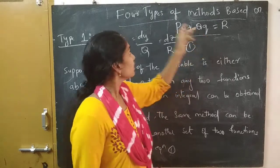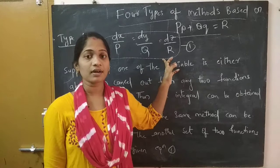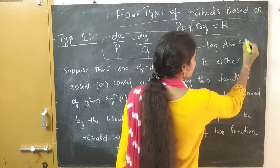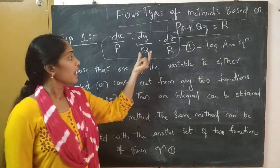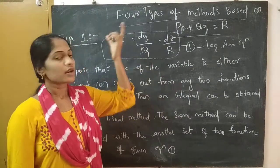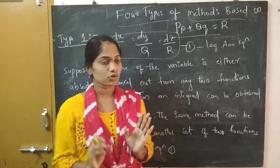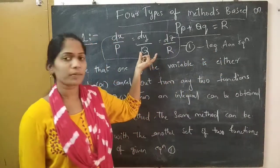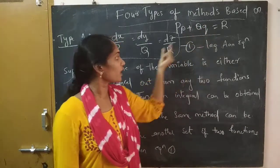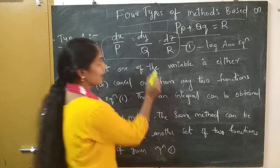This quasi-linear PDE has four types. Type 1 is based on the Lagrange's auxiliary equation. For any problem and any type, the Lagrange's auxiliary equation is common. After observing the Lagrange's auxiliary equation we decide which method is applied to solve it. We compare what is capital P, what is capital Q, and what is capital R, and then write the auxiliary equation in the standard form.